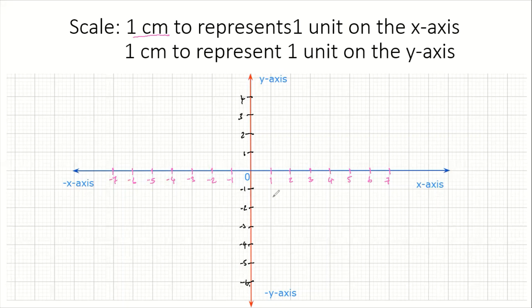And that is how you represent one centimeter on the x-axis as one unit, and one centimeter on the y-axis as one unit. That's how you draw up your Cartesian coordinate system.